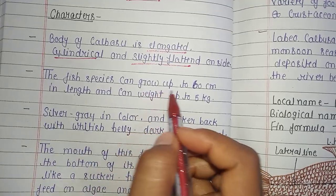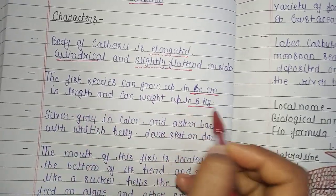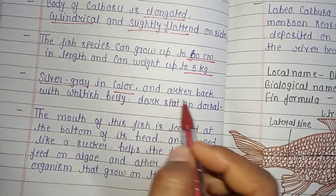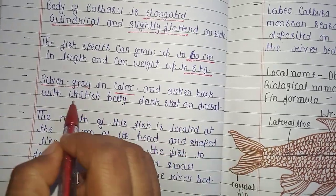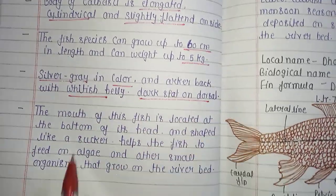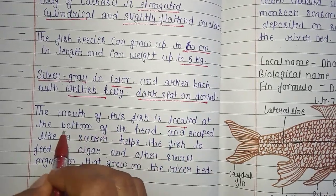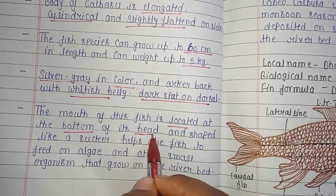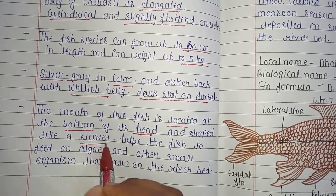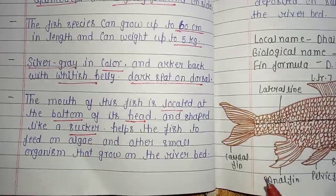This fish species can grow up to 16 centimeters in length and weigh up to 5 kg. It is silvery gray in color with barely visible dark spots on the dorsal side. The mouth is located on the bottom of the head and is shaped like a sucker, helping the fish feed on algae.